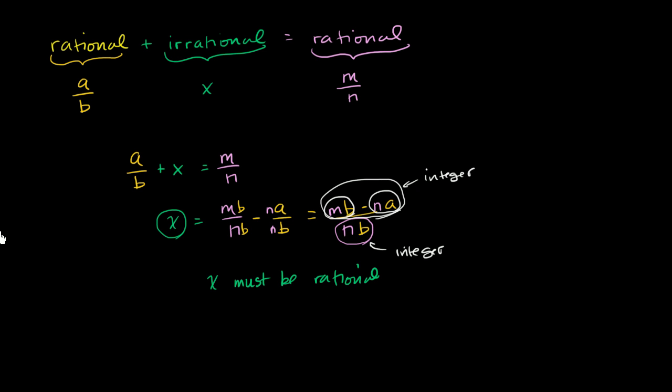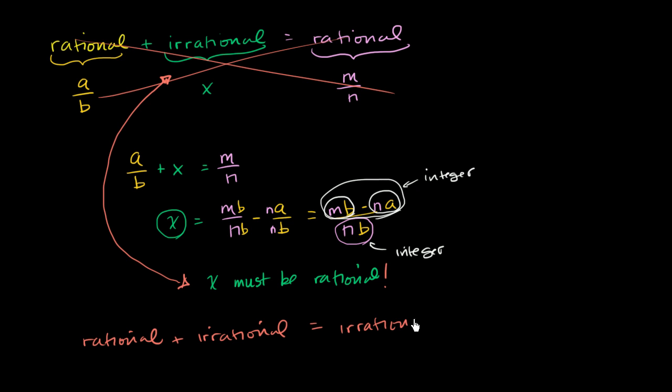And that is the contradiction. The assumption was that x is irrational, but now we got that x must be rational. Therefore, this cannot be the case. A rational plus an irrational must be irrational.